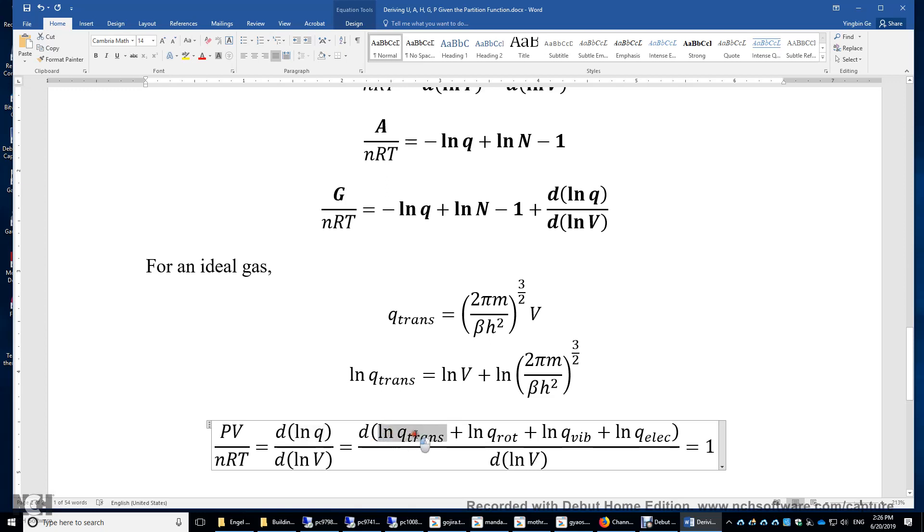It's the sum of Lnq translation, Lnq rotation, Lnq vibration, and Lnq electronic. However, the last three terms are independent of volume. And this term is a function of volume. And Lnq trans is simply the sum of these two terms. Again, the second term is considered a constant as it's independent of volume. And therefore, we have just dLnV over dLnV. We got one. We proved PV equals nRT for ideal gas using statistical thermodynamics.